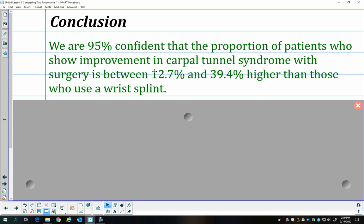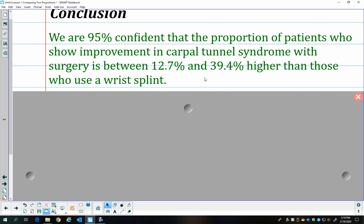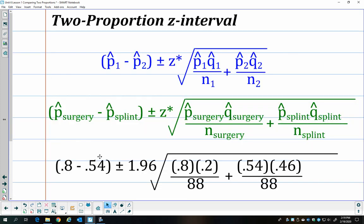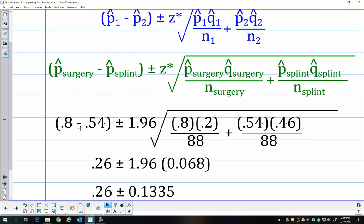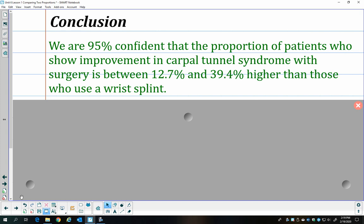And because it was positive when I did surgery minus splints, that means that the surgeries are going to do better than the splints. If you did it the other way around, you would get a negative value for this first part. So we would get, if we did 0.54 minus 0.8, we'd get negative 0.26. And so when we were drawing a conclusion, we could say something about how the patients who use the wrist splints showed improvement between 12.7% and 39.4% lower than the surgery patients. I usually like to try and have a positive value if I can.